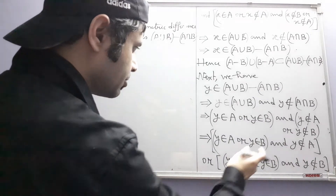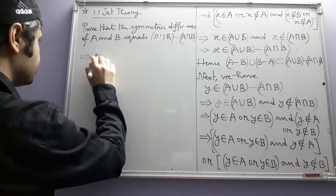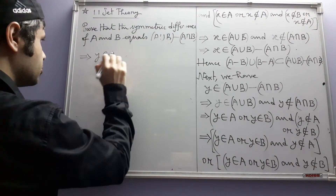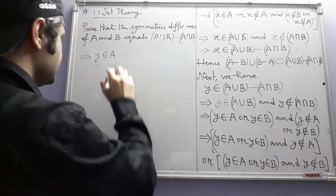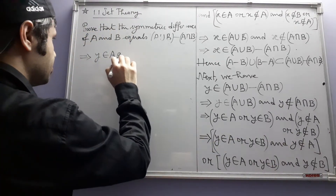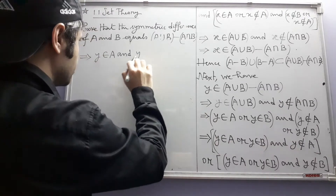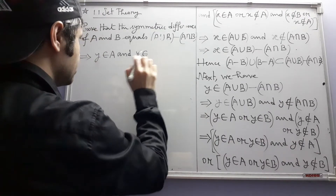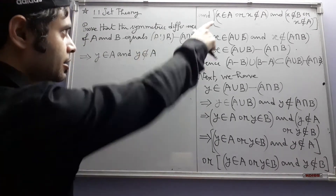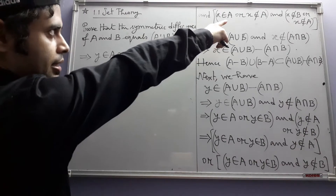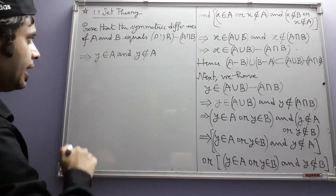Now this implies — again we are going to use the distributive law. Y belongs to A, and 'and' goes inside. Y does not belong to A. See the difference between this situation and the one we had before: there we had 'or', but now we have 'and'.